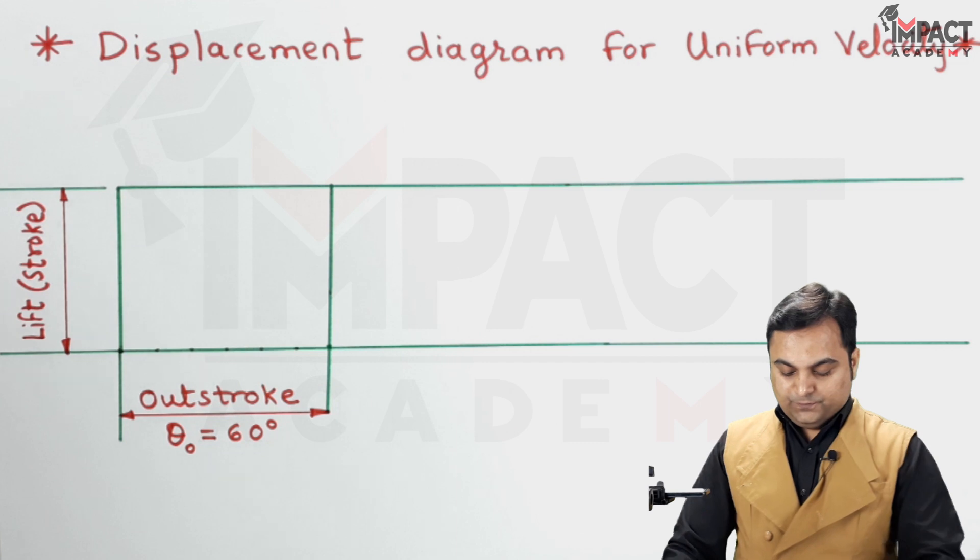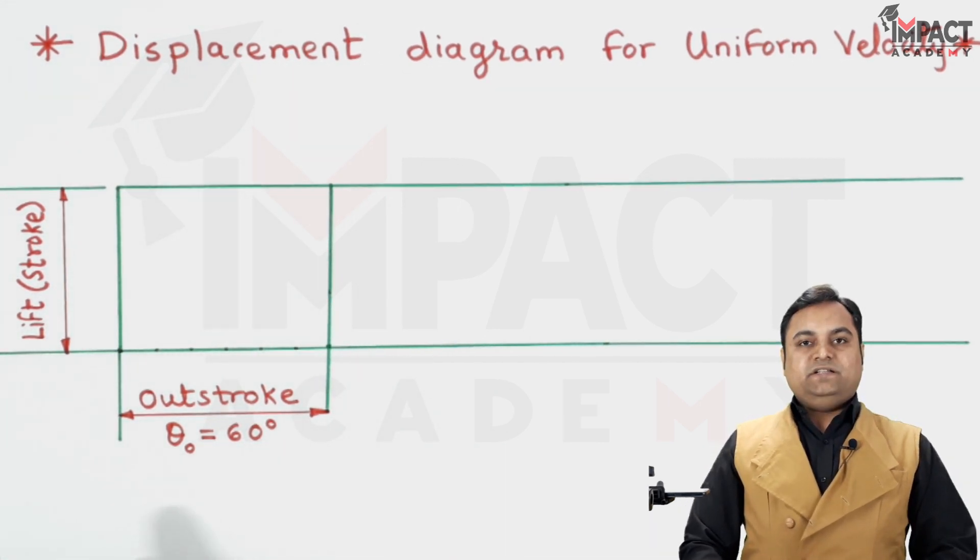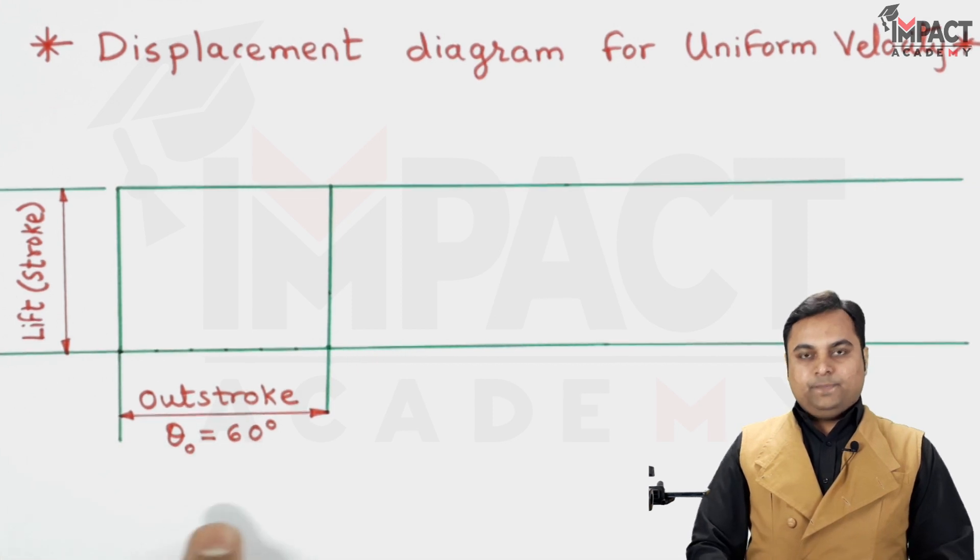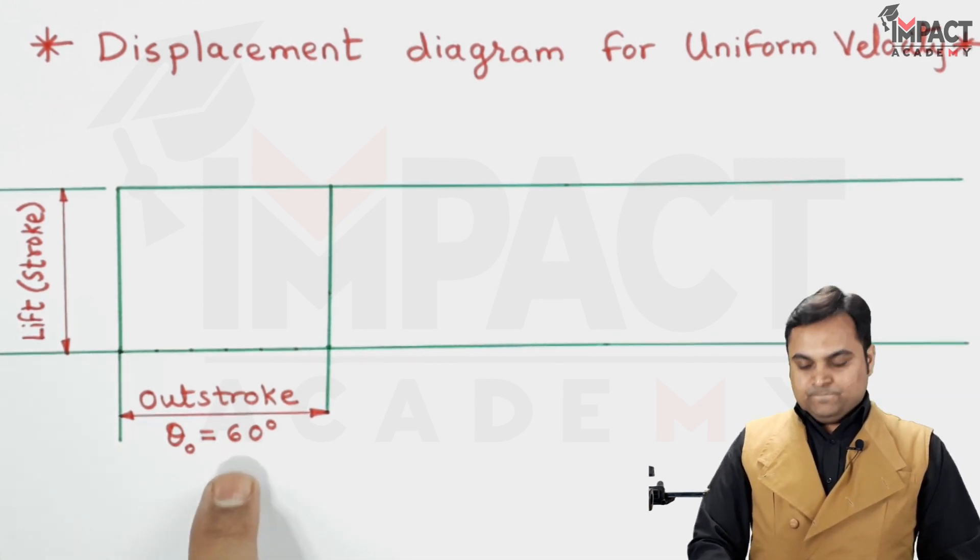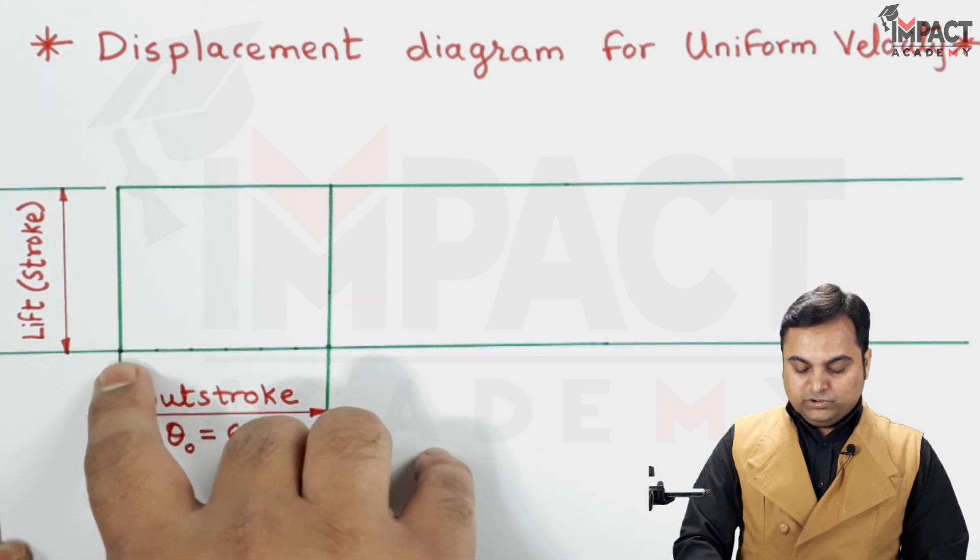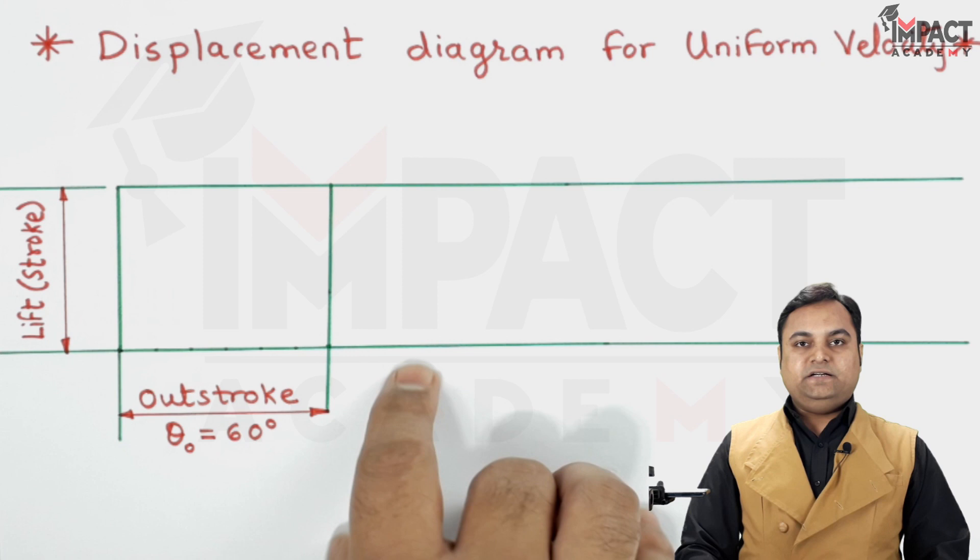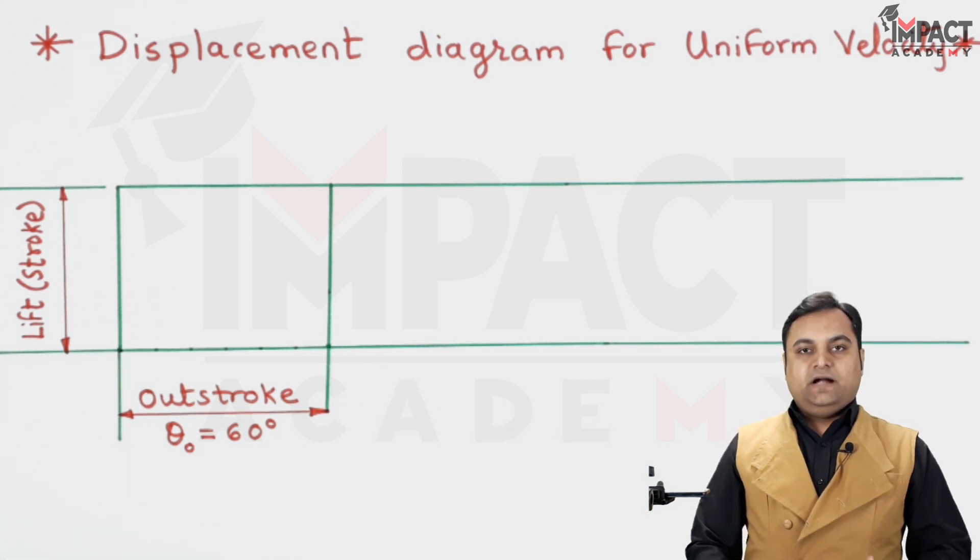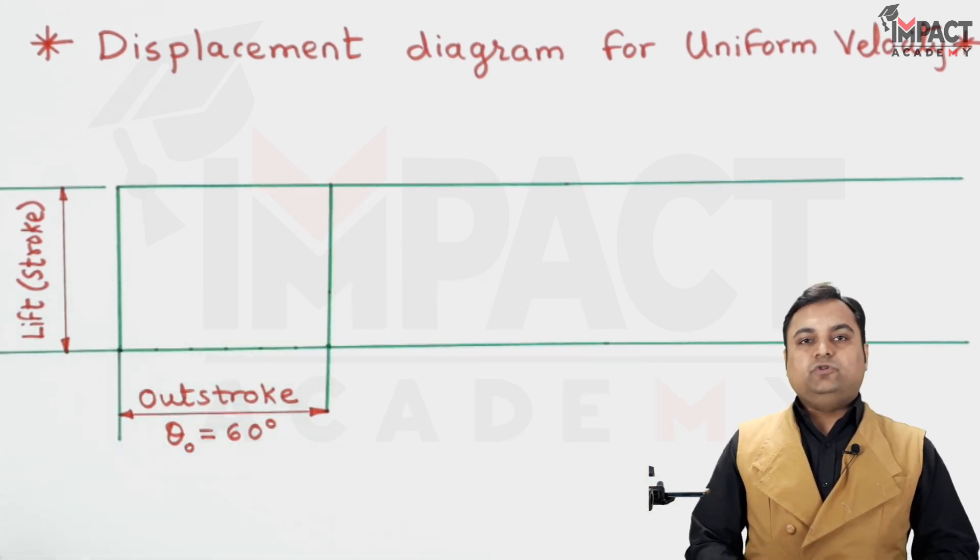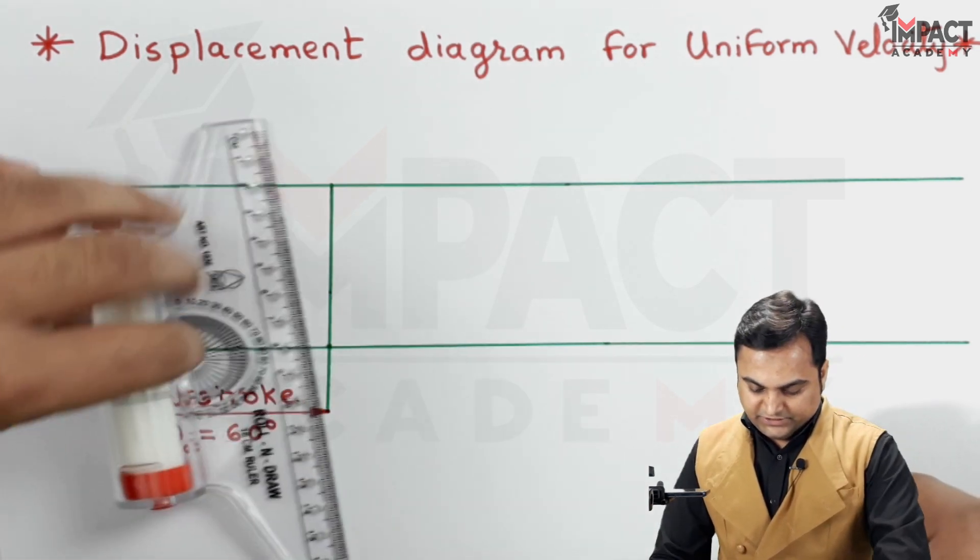Dividing the outstroke into 6 equal parts. Then after outstroke, that is the angle turned by the cam is 60 degrees, and during this outstroke the follower would reach its maximum position. After that there would be dwell, that is the follower is going to rest at that particular top position for some amount of rotation of cam, and that dwell here I am taking it as 30 degrees.